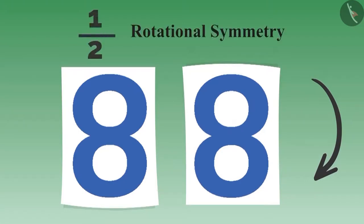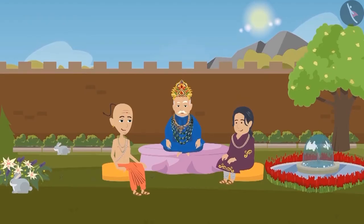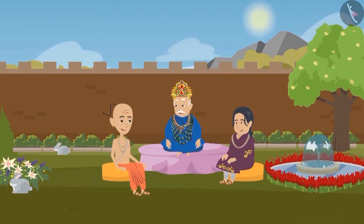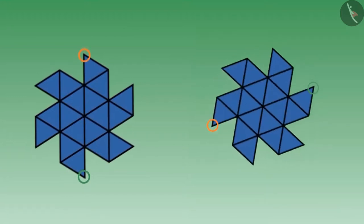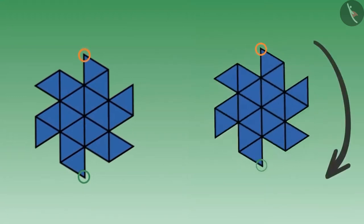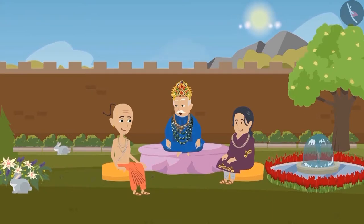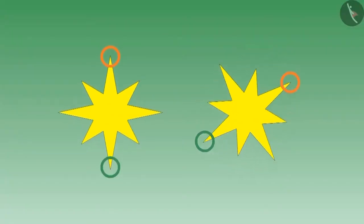This is called half rotational symmetry. The king was very happy with Tenali Raman's cleverness. Tenali Raman said, 'Your highness, take this and rotate it by half.' The king was amazed: 'Tenali Ramaji, this is interesting! Is there any other object like this? Can you please rotate it?'